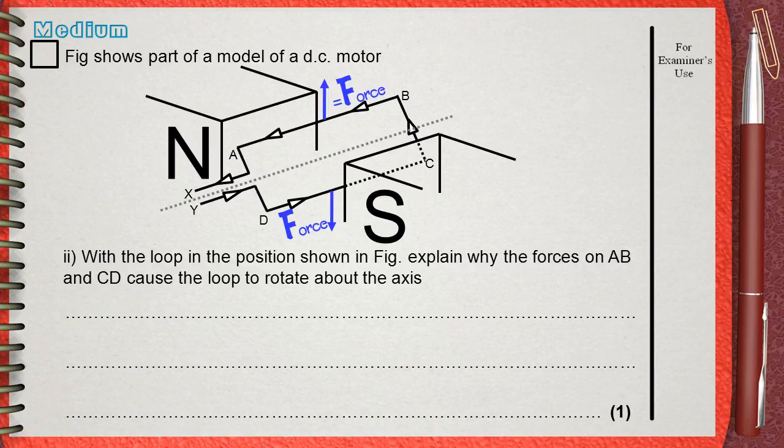Part ii: With the loop in the position shown in figure, explain why the forces on AB and CD cause the loop to rotate about the axis.